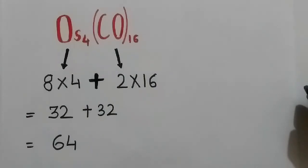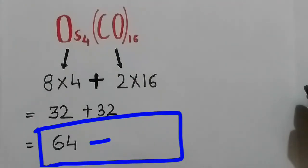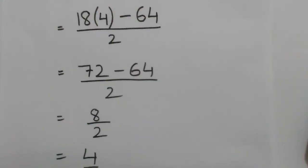In another example of osmium complex, the total electron count here is 64. After substituting the value for the number of metals and the total electron count, the metal-metal bond order we get is 4.